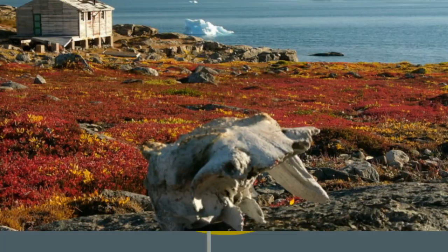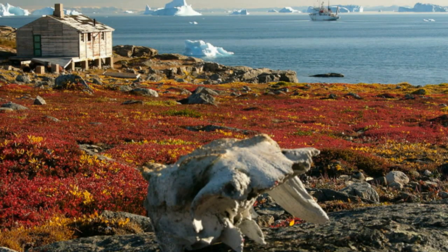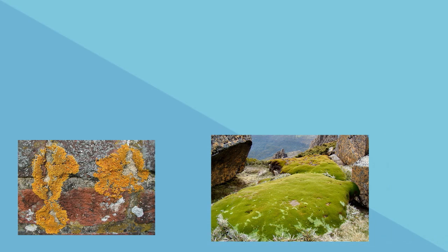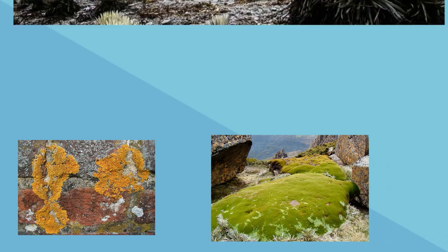Plants in the tundra have a short growing season and are small short plants. Examples include lichen, moss, and shrubs. There are no trees in the tundra and it only receives between 6 and 10 inches of rainfall a year.